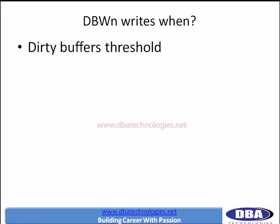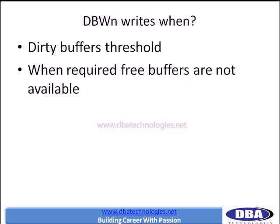When DB Writer is going to write: first, when dirty buffers reach some threshold — they are building up and it is not a good idea to keep all those modified buffers in the volatile buffer cache, so it is time to flush that information to data files. Second, when a server process is trying to pull thousands of rows, we need adequate free buffers. When a server process cannot find the required free buffers, DB Writer also writes all the dirty buffers to DBF files so that those buffers can be utilized to pull the required information into the buffer cache for the new process.